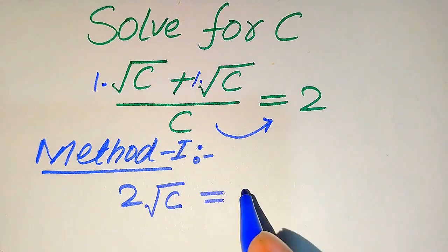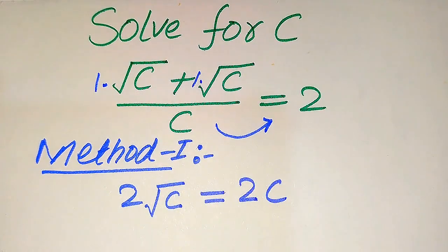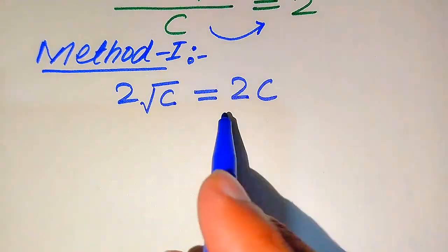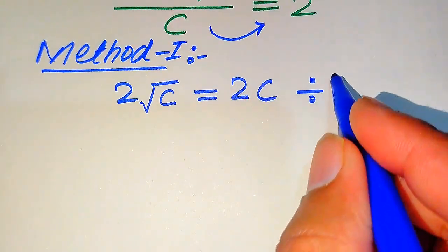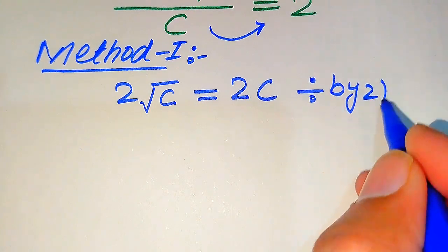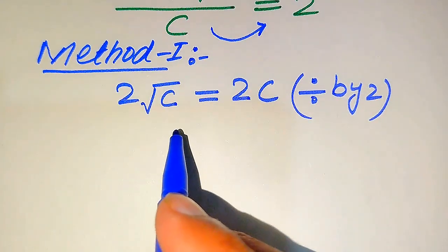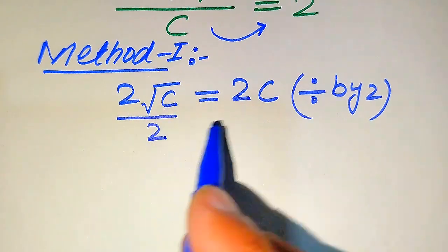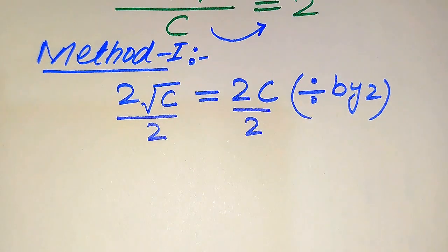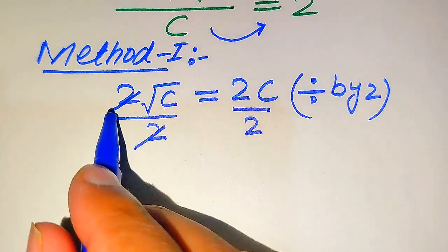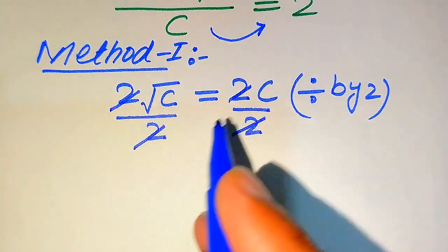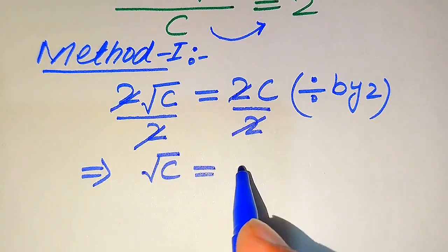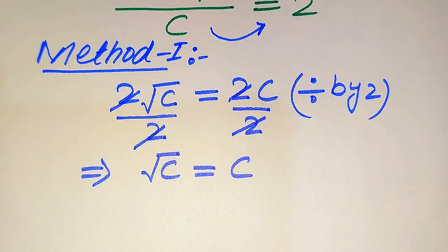We move C to the right-hand side, so it becomes 2 times C. Now both sides involve 2, so we divide both sides by 2. The 2s cancel out and we obtain: square root of C equals C.